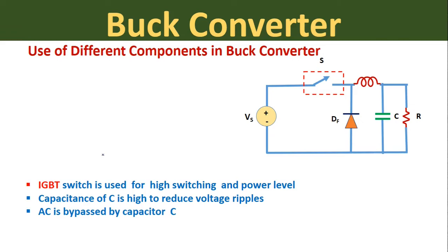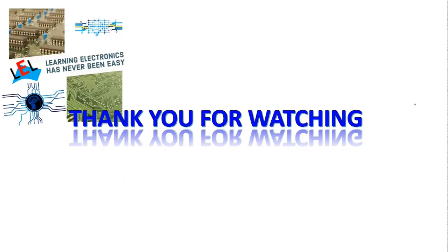This gives us the final circuit diagram of the buck converter. In the buck converter, we use an IGBT (Insulated Gate Bipolar Transistor) as the switch, which is a power semiconductor device with high switching speed. The capacitance of the capacitor is kept high to reduce the voltage ripple, and the capacitor is also used to bypass AC so that we get a DC voltage at the output. In the next class we are going to see the analysis of the buck converter.